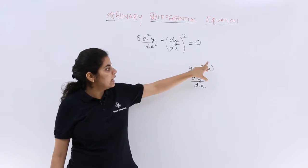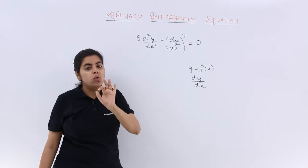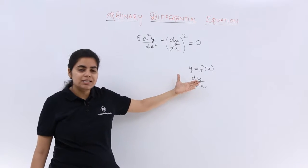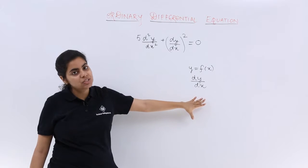Here, only y and x come into picture. Only one independent variable is there, that is x, one dependent, that is y.